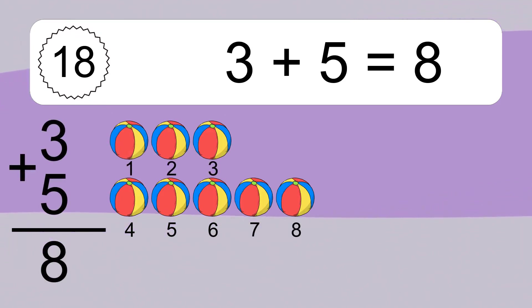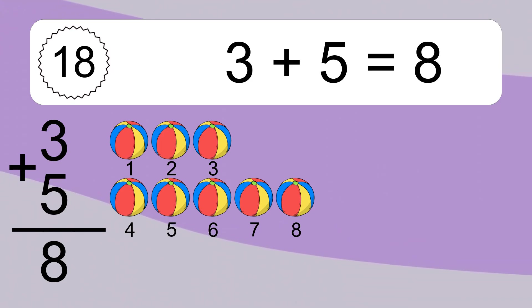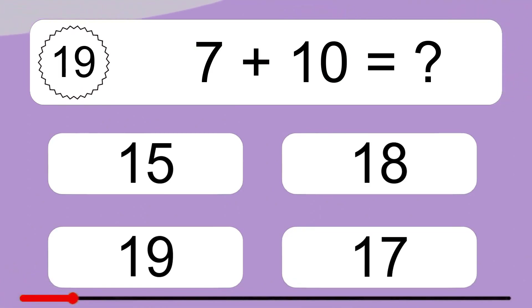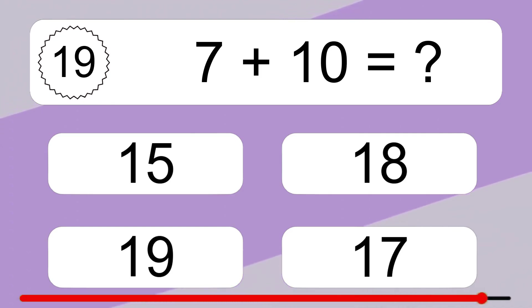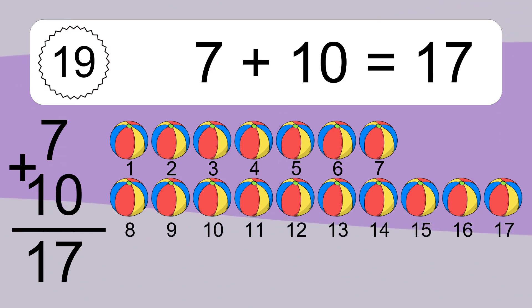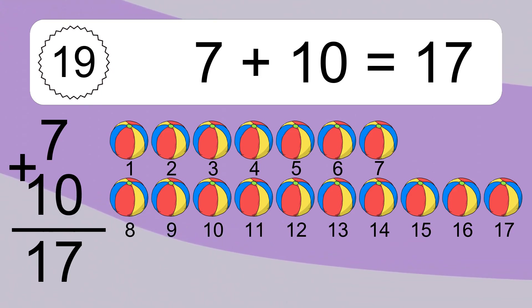3 plus 5 equals what? 3 plus 5 equals 8. Let's count it: 1, 2, 3, 4, 5, 6, 7, 8.